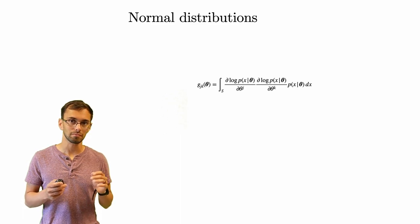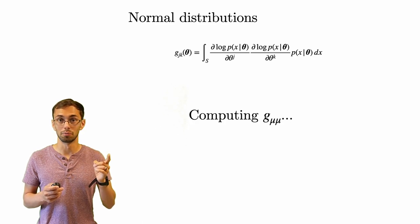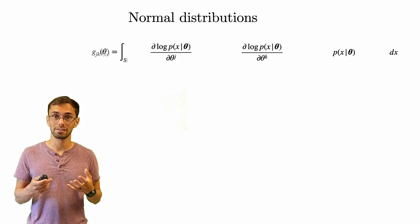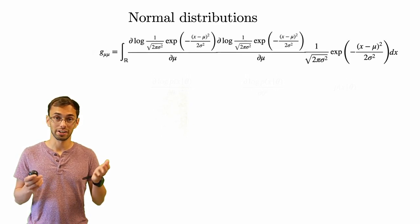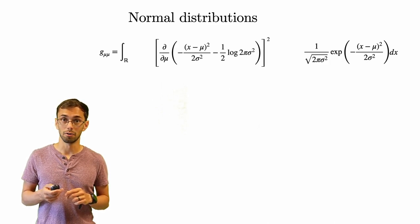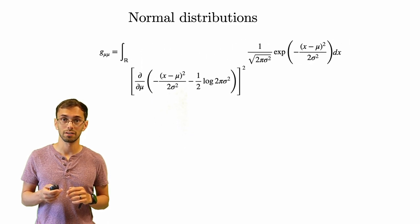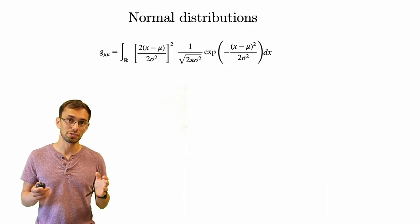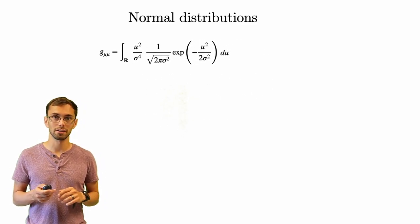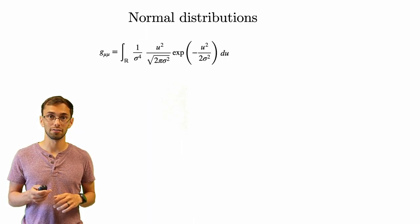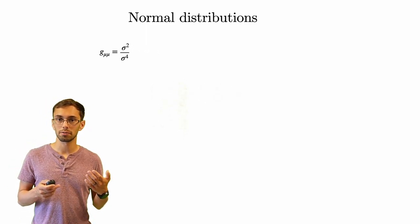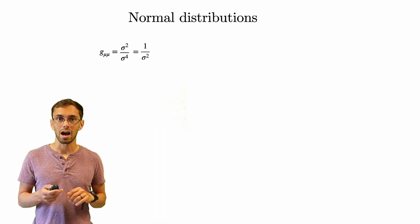Let's actually compute the Fisher metric for normal distributions. There are four components; I'm just going to compute one of them. To compute the g_{mu,mu} component, we take the expression, put in the Gaussian kernel, and simplify. We combine terms, take derivatives, and perform a u-substitution to center the distribution and get rid of that x minus mu. This simplifies nicely because we can pull out one over sigma to the fourth out of the integral, and since we know the second moment of a Gaussian distribution, when we compute the g_{mu,mu} component of the Fisher metric, we get one over sigma squared.